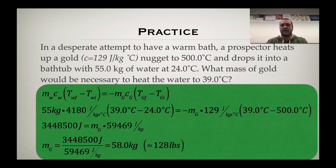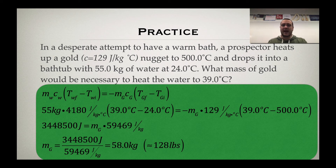That energy will flow from high temp to low temp until equilibrium is reached. So here, we see the 500 degree temperature of the gold nugget reduced down to 39 degrees Celsius. So as a result, we know that that gold nugget has lost thermal energy, so it is going to go on the right side of the formula.